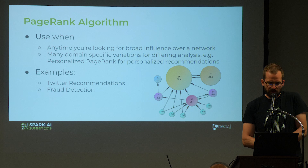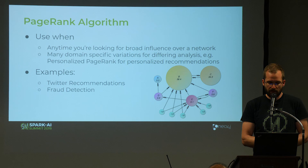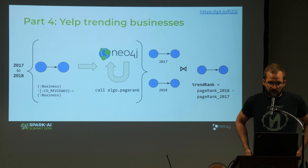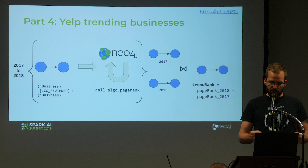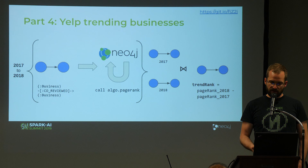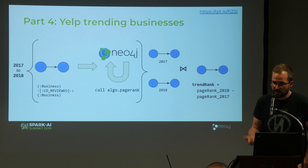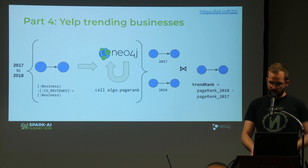We want to use PageRank for this. PageRank is an algorithm for measuring influence in a network. It was initially invented for measuring websites in the web graph, which is what made Google popular. It can be used for recommendations in Twitter or fraud detection. We want to take two snapshots — the 2017 and 2018 projections of businesses co-reviewed with other businesses — use Neo4j PageRank to compute the score on those two graphs, load them back into Spark, and find the difference between PageRank of 2018 and 2017 for each business to compute a trend rank.